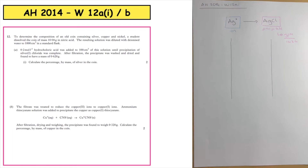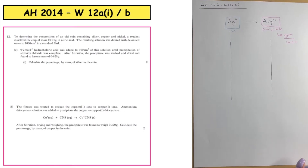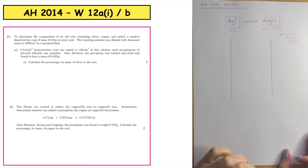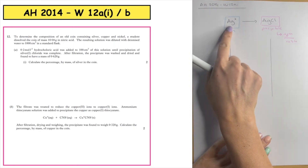This is a past paper question from the Advanced Higher 2014, written question 12a part 1. The question asks us to calculate the percentage by mass of silver in a coin. The coin has been dissolved in nitric acid and the resulting solution was diluted with deionized water to 1000 cm³ in a standard flask. 0.2 moles of hydrochloric acid was added to 100 cm³ of this solution until precipitation of silver(I) chloride was complete.